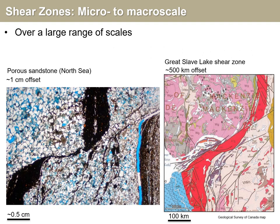One of the fascinating aspects of shear zones is that they can occur on very different scales. This picture to the left is at micro scale showing a shear zone of about half a centimeter of offset. And the picture to the right is the Great Slave Lake shear zone, which shows about 500 kilometers of offset. But they look fairly similar in terms of structure.